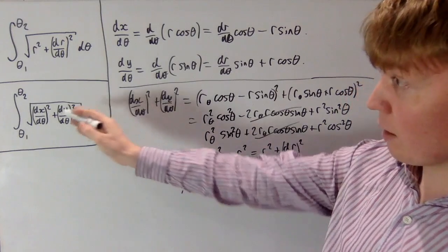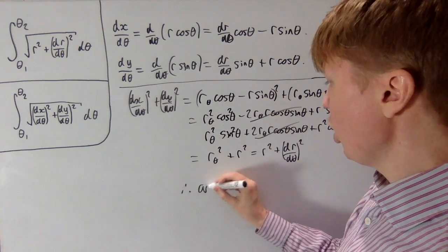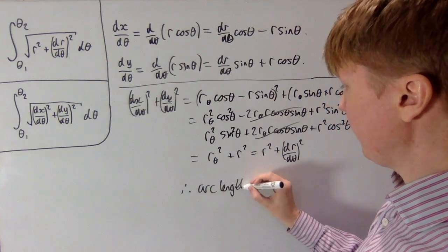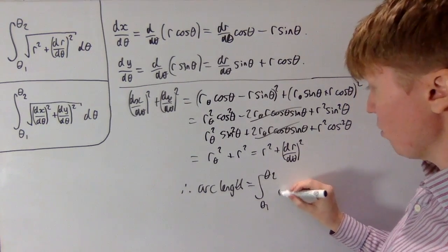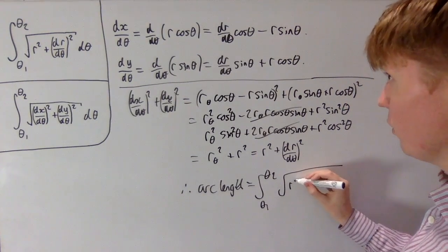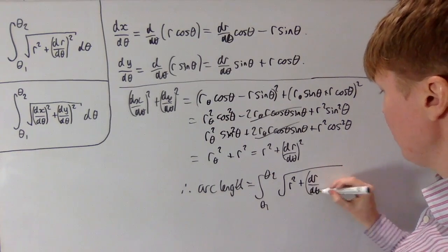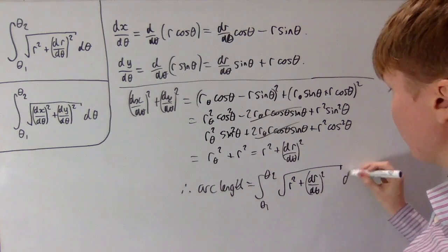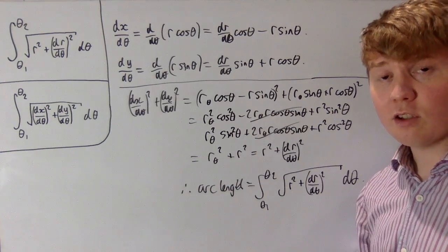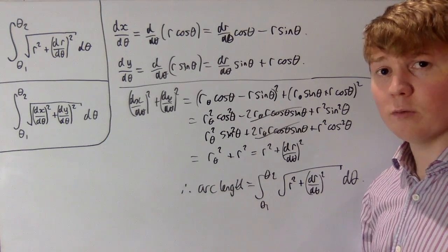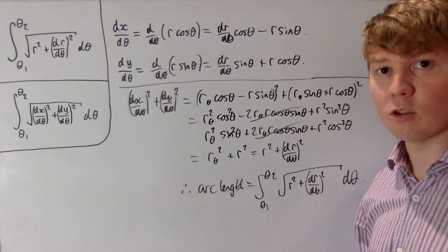We conclude that the arc length formula in polar form is the integral from θ₁ to θ₂ of √(r² + (dr/dθ)²) dθ. This doesn't constitute a rigorous proof, but hopefully gives an idea of where this formula comes from.